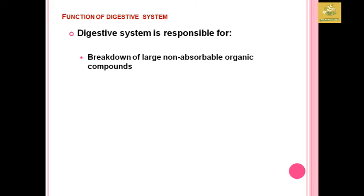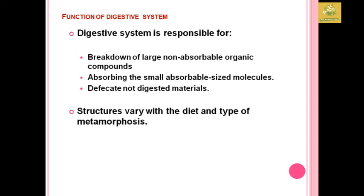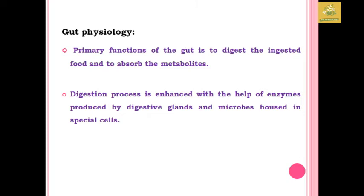The functions of the digestive system include the breakdown of large non-absorbable organic compounds, absorption of small absorbable-sized molecules, and defecation of non-digestible materials. The structure of the digestive system varies with the diet and the type of metamorphosis undergone by the insect.